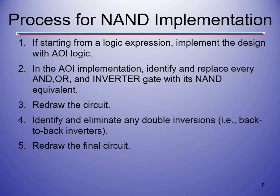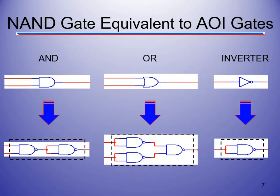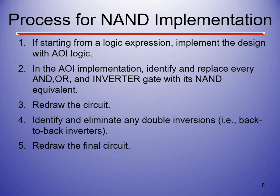Now we're going to take our AOI circuit — AND, OR, and inverter — and convert it to a NAND circuit. Step one: implement the original design in AOI. Step two: replace all ANDs, ORs, and inverters with their NAND equivalents — two NANDs for AND, three NANDs for OR, one NAND for inverter. Step three: redraw the circuit. Step four: identify and eliminate any double inversions, since double inverting returns the same signal.